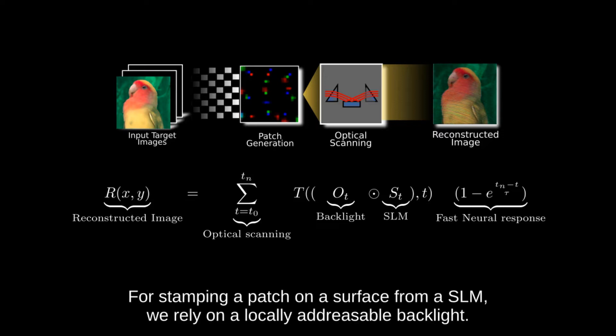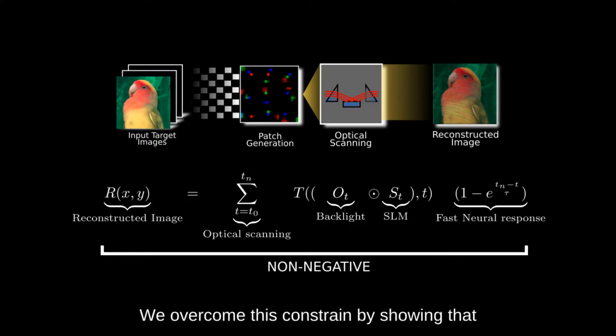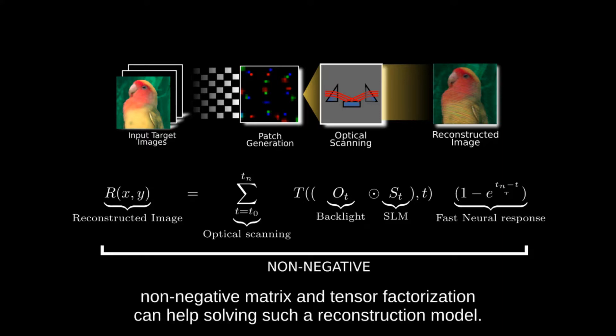For stamping a patch on a surface from an SLM, we rely on a locally addressable backlight. As our backlight uses incoherent illumination, non-negativity is a constraint in this problem. We overcome this constraint by showing that non-negative matrix and tensor factorization can help solve such a reconstruction model.